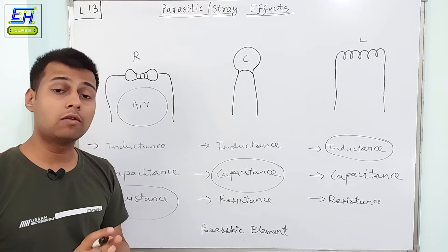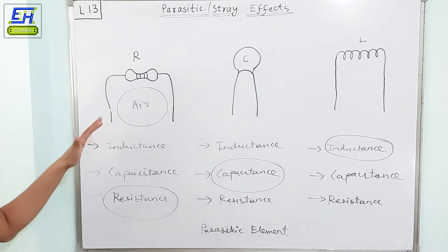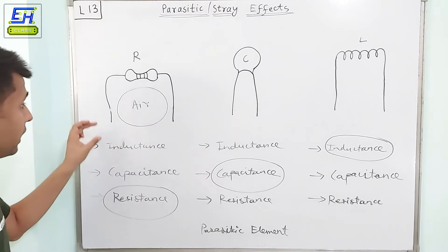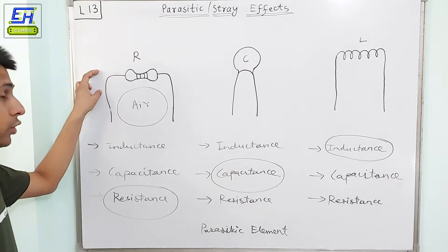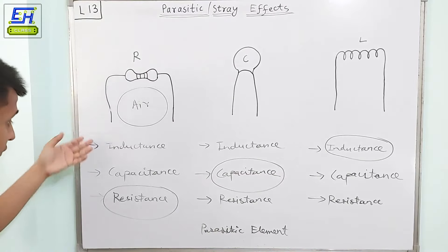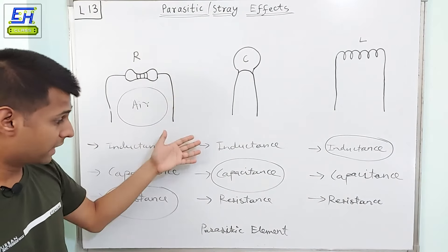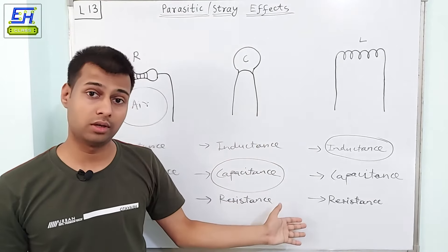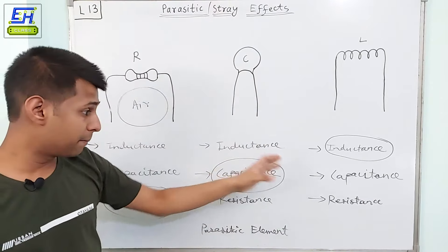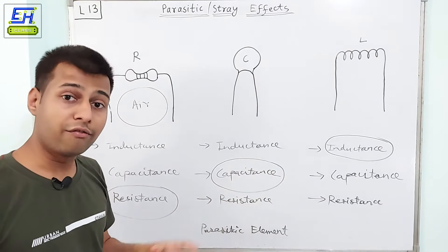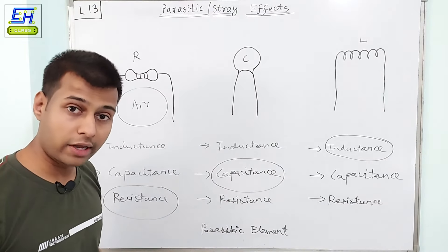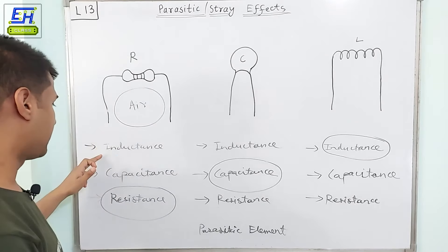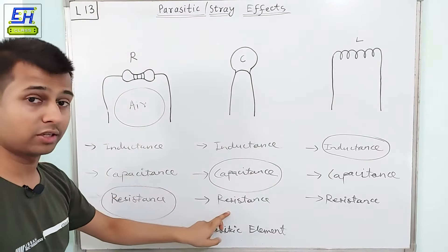Parasitic elements are the unwanted elements because ideally you don't want any inductance or capacitance to be present in a resistor. You don't expect a resistor to have these properties. You don't expect a capacitor to have inductance or resistance. You don't expect an inductor to have capacitance or resistance. Definitely their presence in the circuit will affect the performance of the circuit accordingly. So from this we can see that parasitic elements have three types: parasitic inductance, parasitic capacitance, and parasitic resistance.